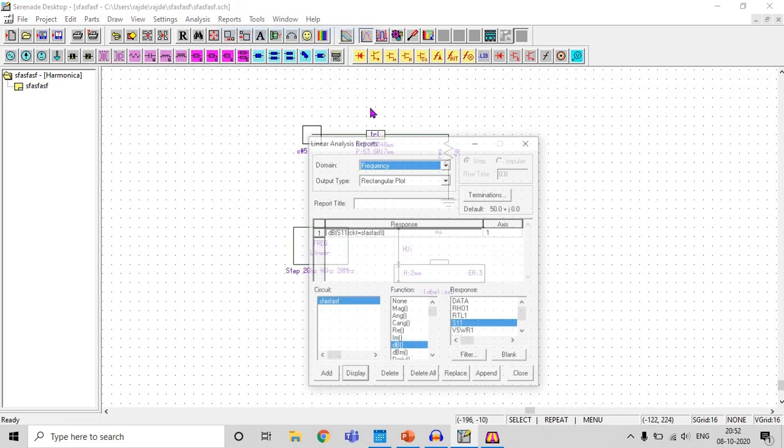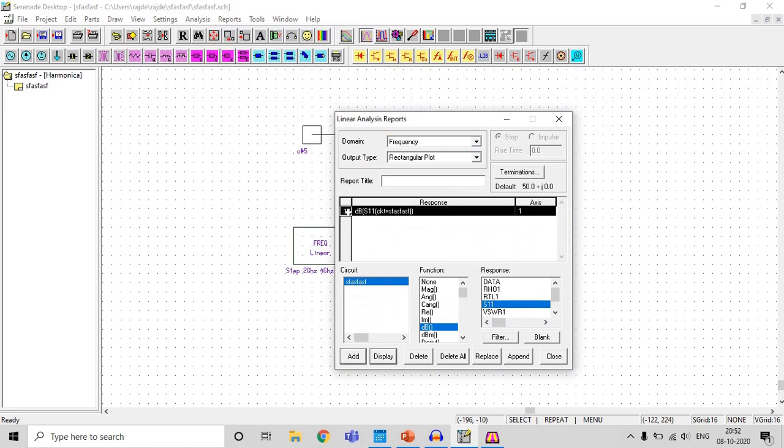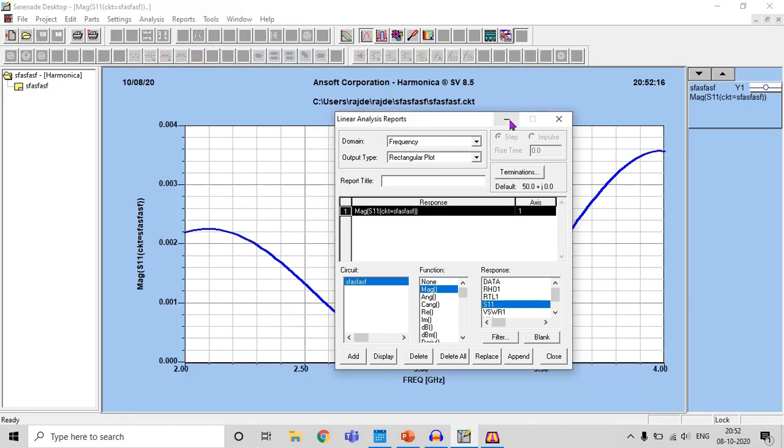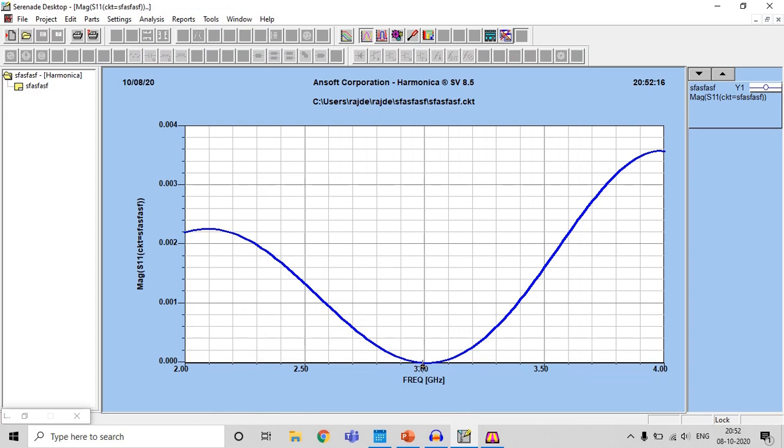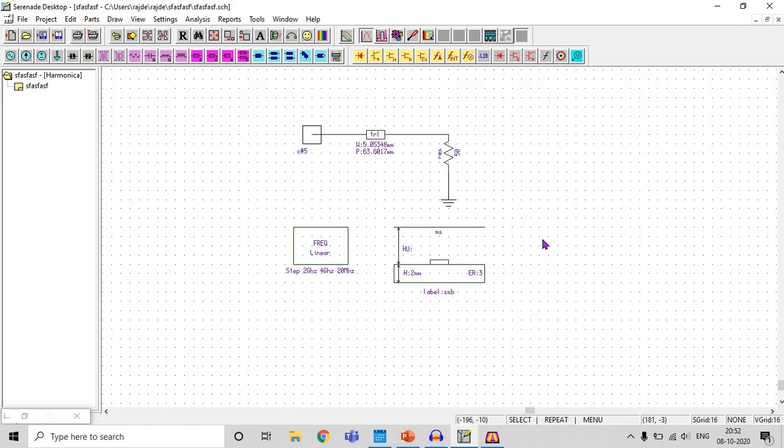So let's try with the magnitude. So report - you just delete the previous one, select S11 and select mag here, perfect. Add display and see at 3 gigahertz we are getting S11 zero, coinciding with our theory, perfect. And it is getting at 3 gigahertz because we have designed our transmission line for 3 gigahertz, so that's why we are getting a match at 3 gigahertz.